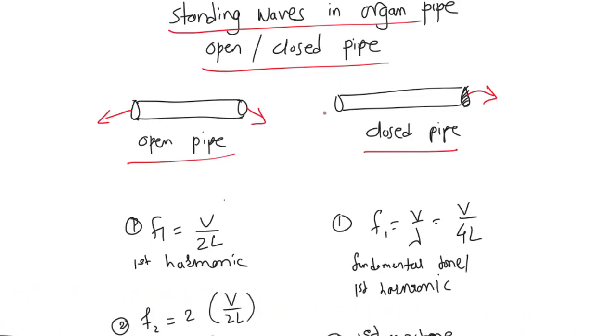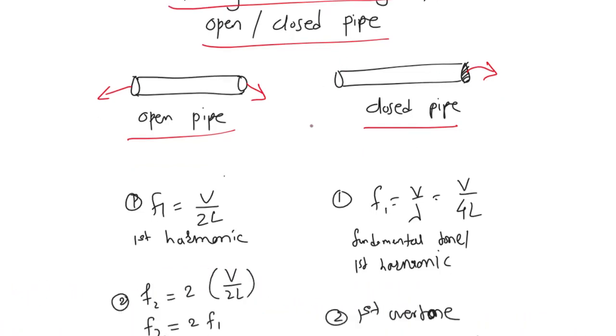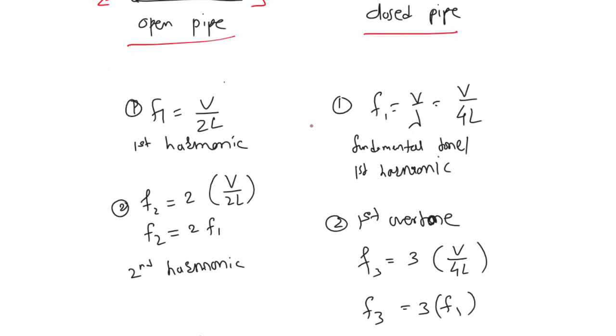There are different variations in terms of harmonics in these two pipes. Let's talk about the open pipe first. The fundamental frequency for the open pipe is given by v/2L, and that is also called the first harmonic.